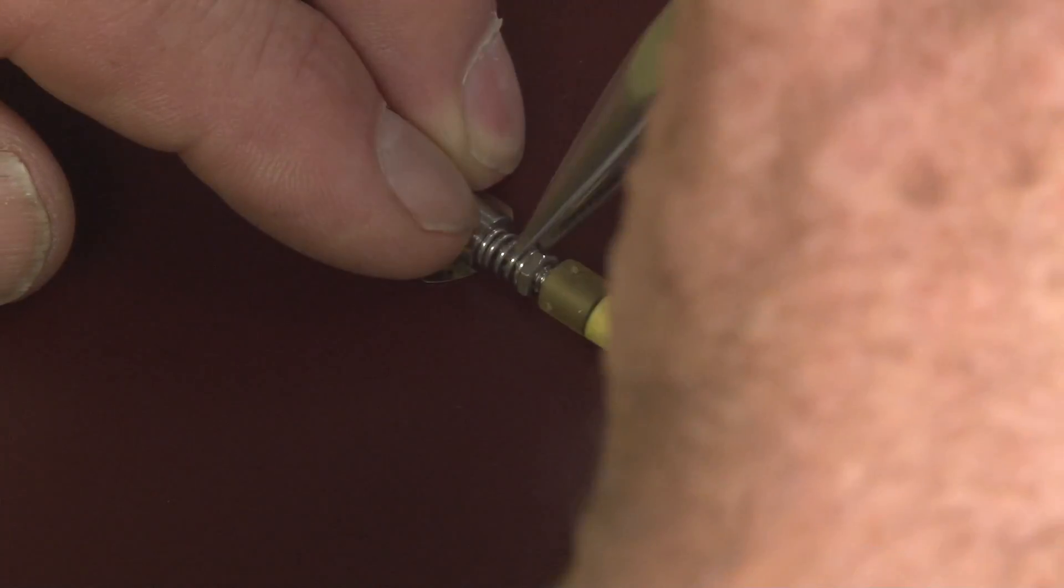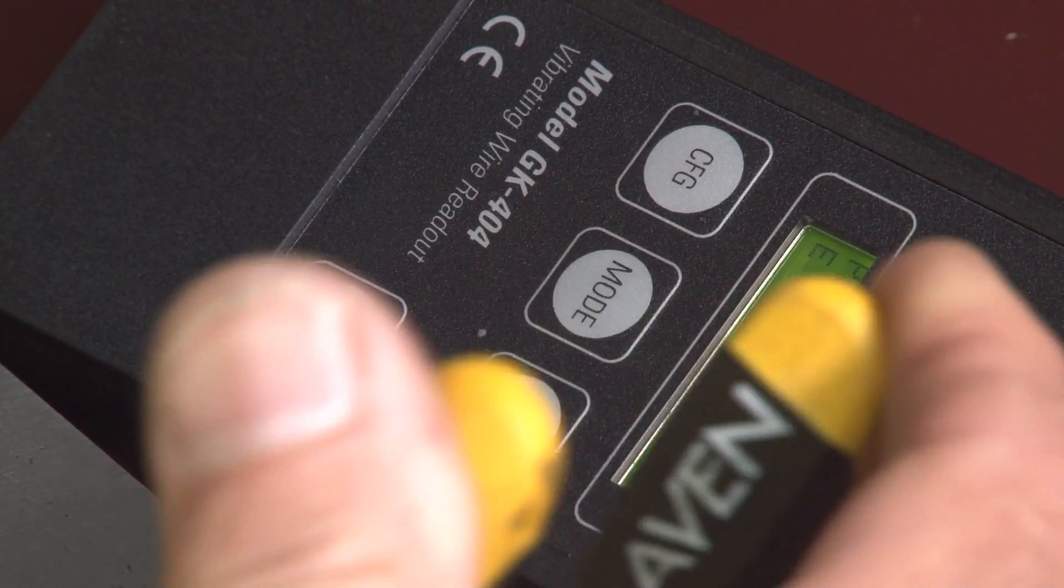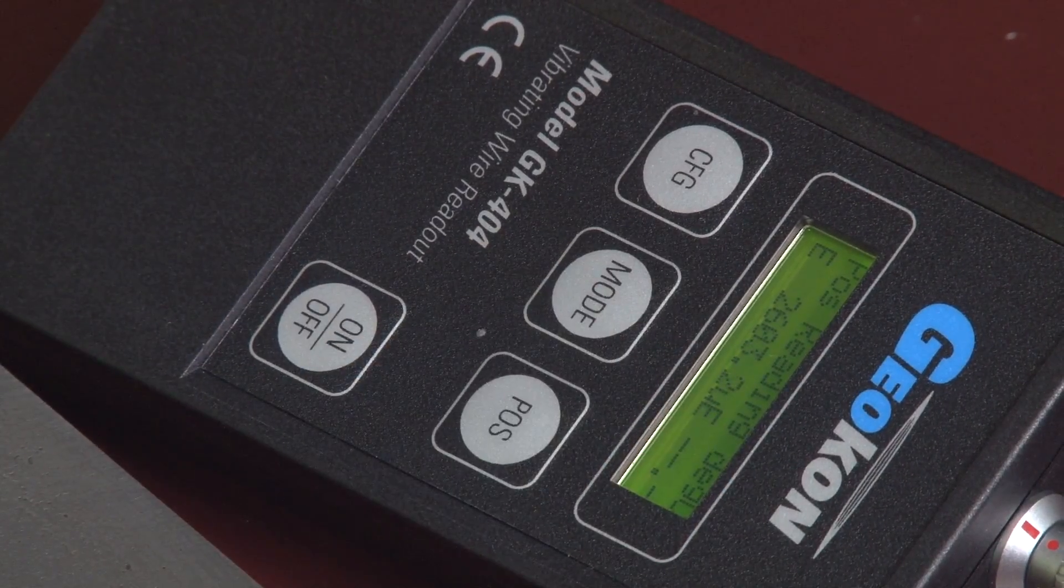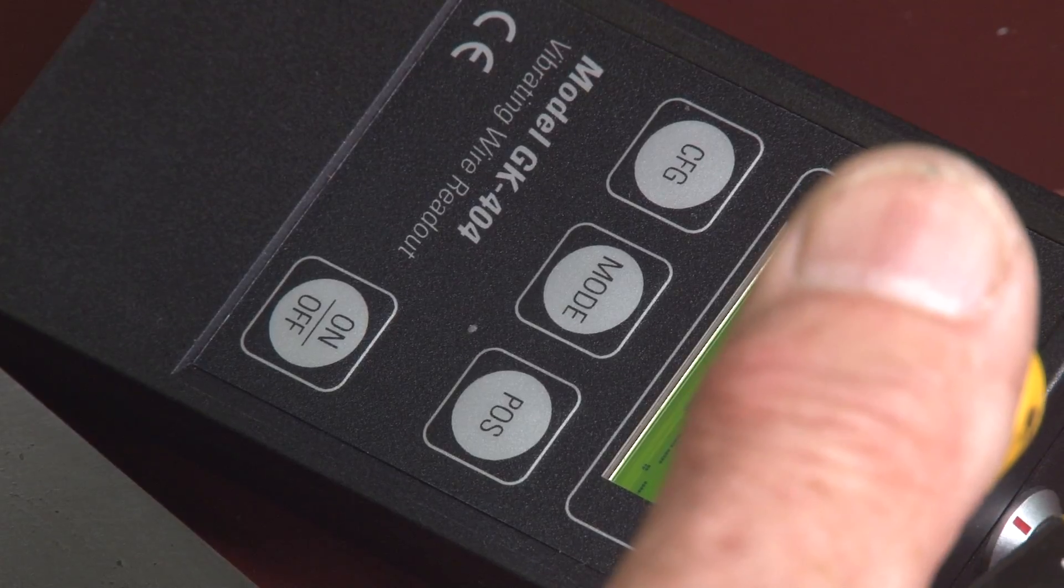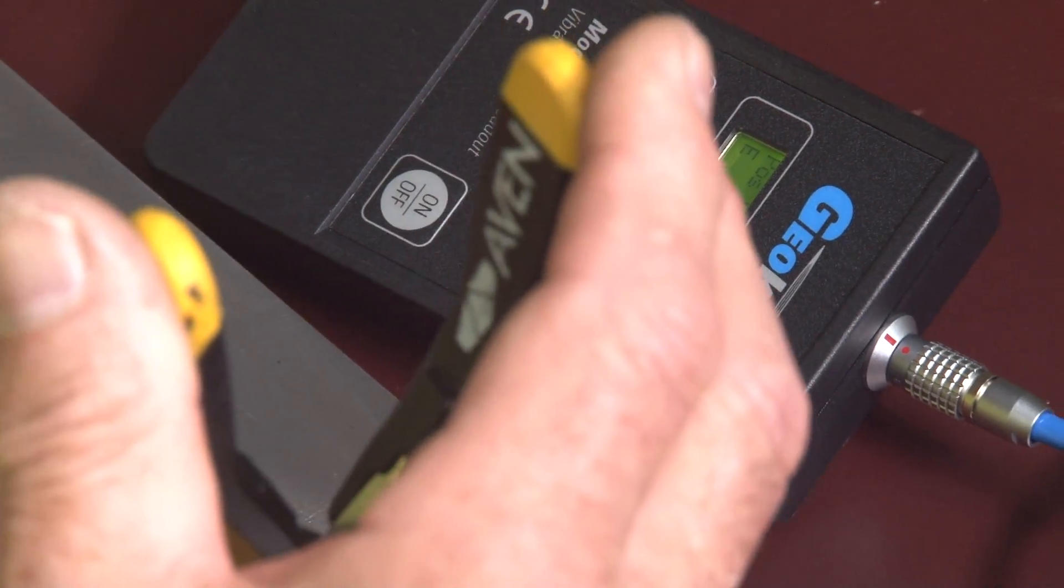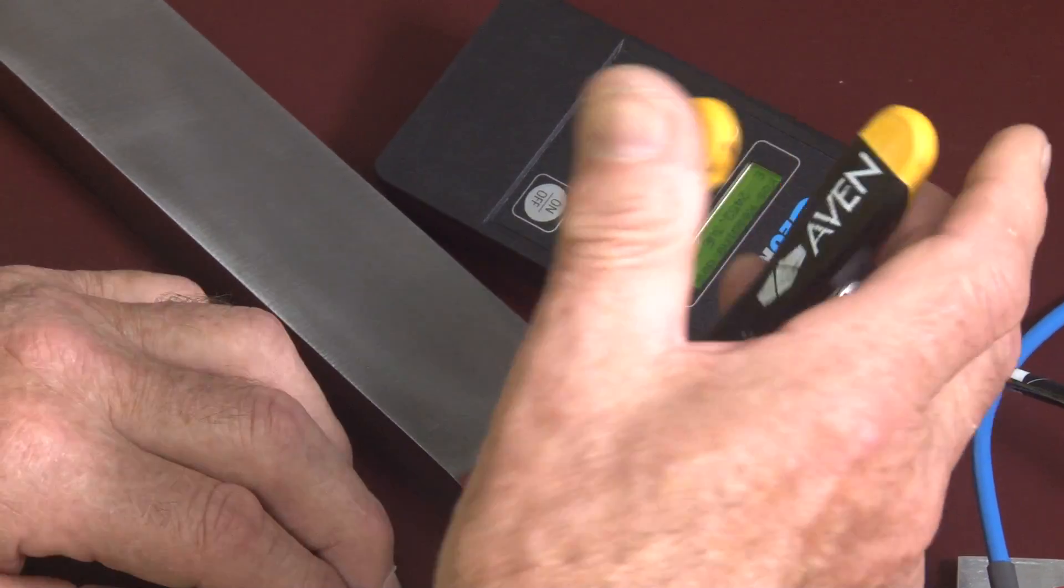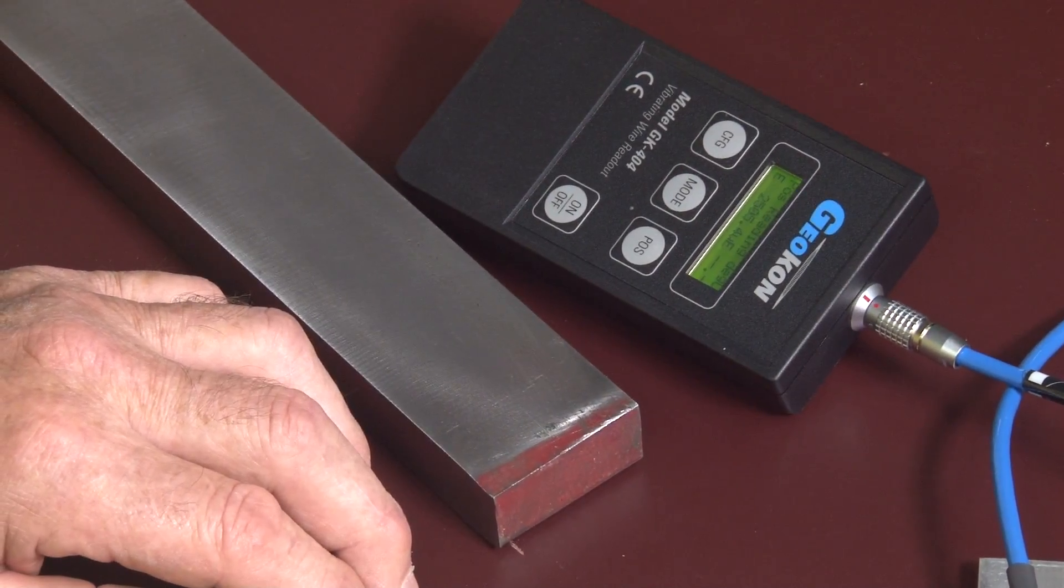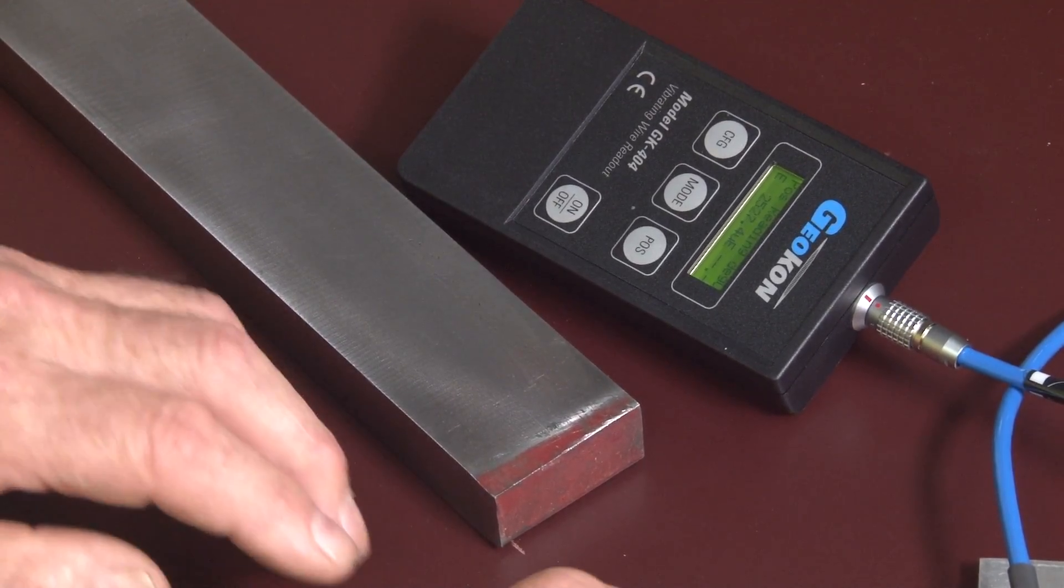We can watch the readout as we do it. I'll turn it back a bit, watch the reading. That's 2600, 2550, so 2550 is pretty much perfect, but I'll go back just a little bit more. So there's 2529, so that's the mid-range position.